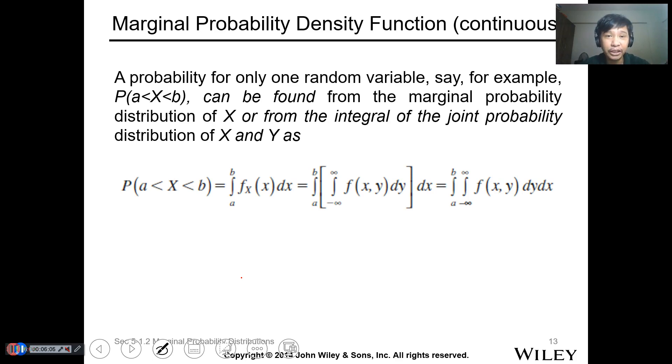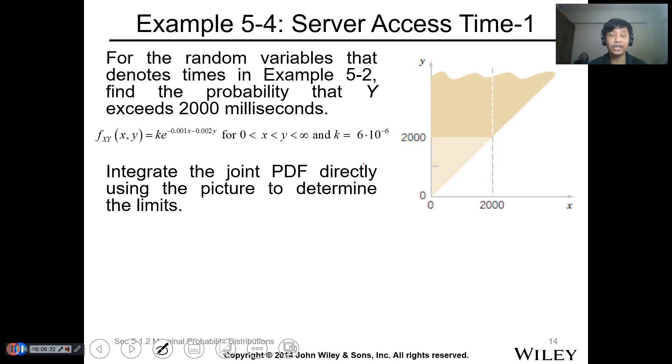For example, a probability for only one random variable. We want to get the probability for all values of x from a to b. To use the marginal distribution, you need to evaluate f(x) with dy. You just evaluate the dy. It's better to see this in an example. For the random variables that denote time, in Example 5-2, find the probability that y exceeds 2000 milliseconds.